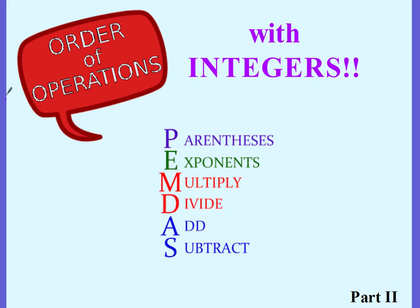This is Order of Operations Part 2. Today we're going to be solving Order of Operations problems, but problems that have integers. We've already gone through PEMDAS, the steps of the Order of Operations, and we've solved regular problems using these steps, but now we're going to do the same thing but with some negative numbers involved.